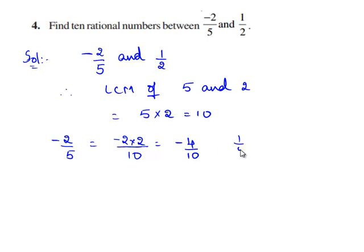And 1 by 2 can be written as, with 10 as denominator, 2 times 5 is 10. And 1 times 5 is equal to 5 by 10.